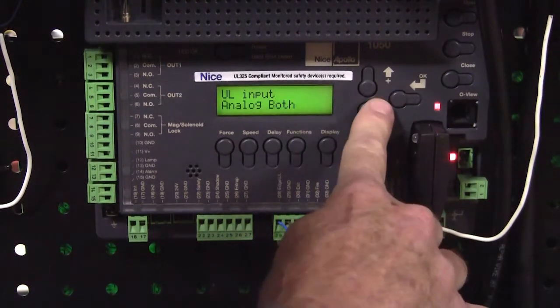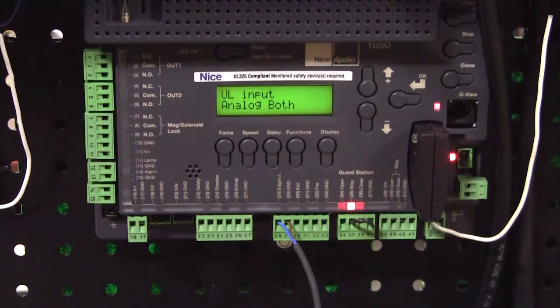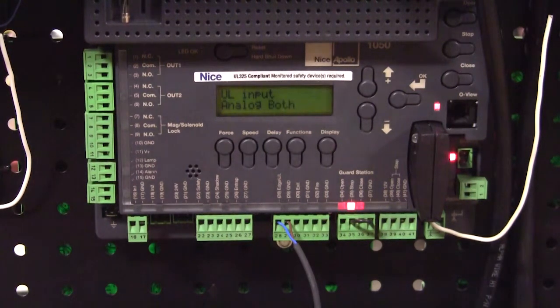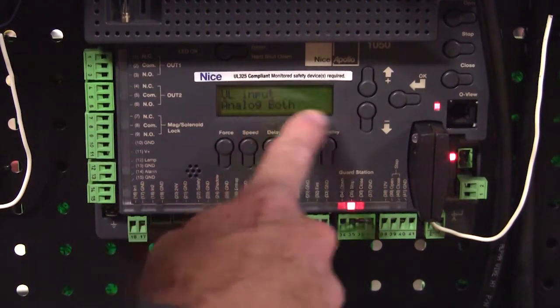We're going to change it to analog and now here we have choices for both open or close. Both would be a wraparound edge protecting the gate both opening and closing and this is only a selection for our swing gate application. So if we're in learn mode for a swing gate it's going to give us this option. Close would just protect the gate in the closing direction, open would just protect in the open direction. So we're going to go ahead and program it as both.